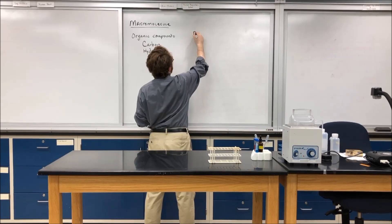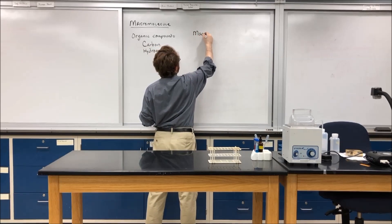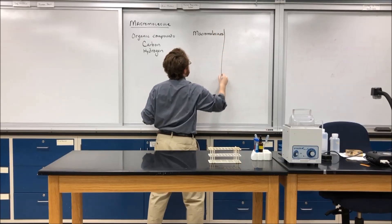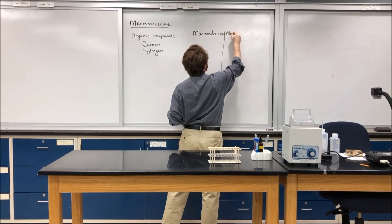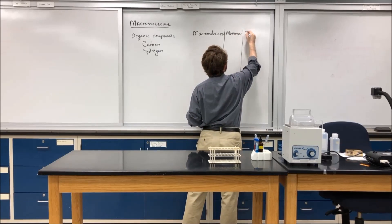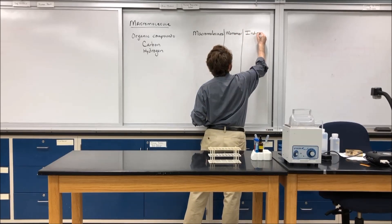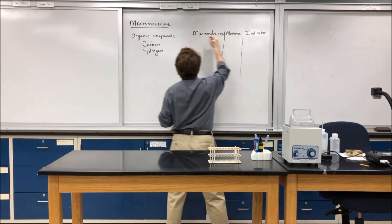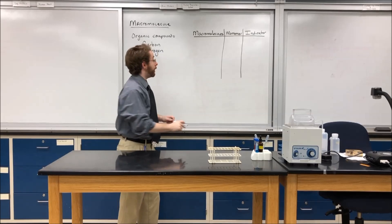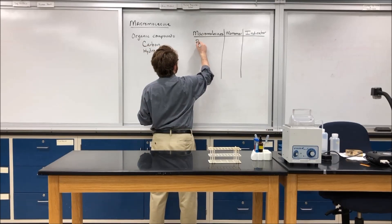So let's make a table of the different types of macromolecules, their monomers, and the indicators that we can use in the lab to identify them. The first macromolecule is protein.